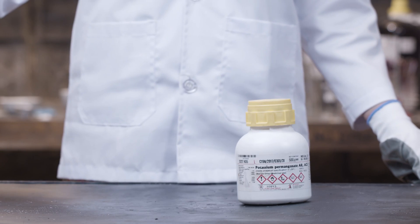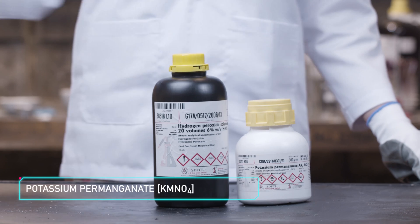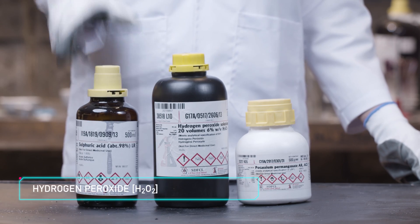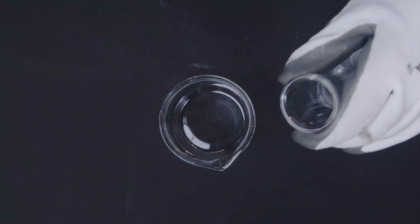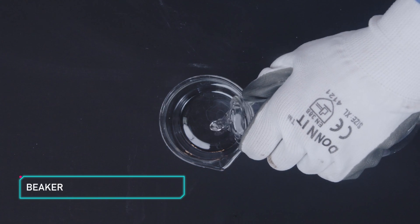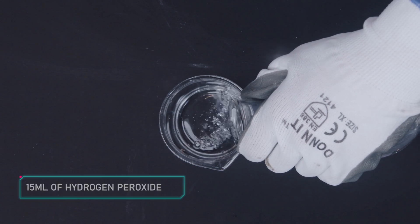So our pals for the day are potassium permanganate and hydrogen peroxide. Let's go! First, get a beaker and pour in 15 ml of concentrated hydrogen peroxide.